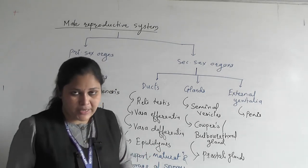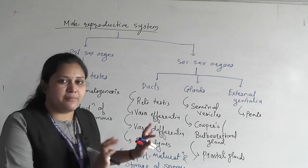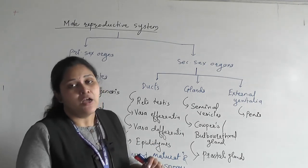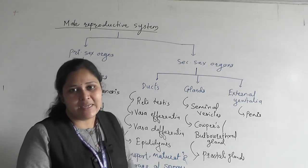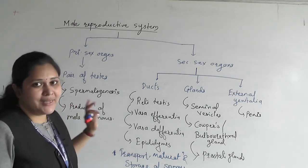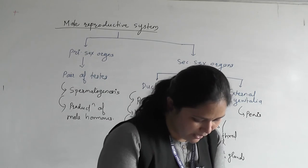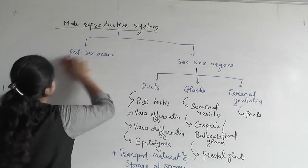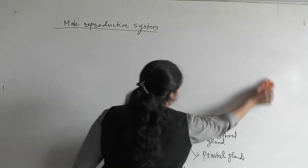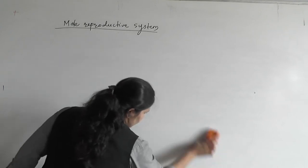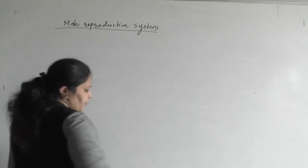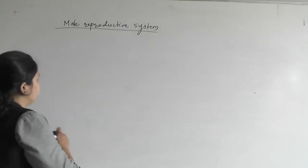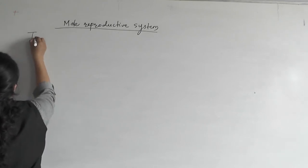Let's begin with the first organ — the primary sex organ in males, that is testes. I hope you draw this flowchart and we will begin the structure of testes. This lesson is going to continue for a number of days, but I will try to make it more interactive and interesting. Humans have one pair of testes as primary sex organs. They are small in size — nearly 4 to 5 centimetres in length and 2 to 3 centimetres in width.